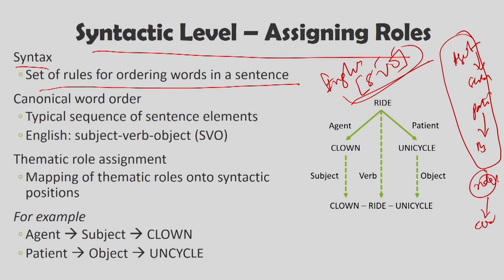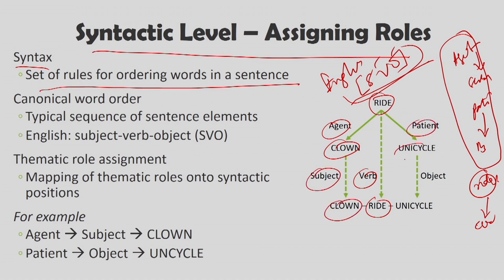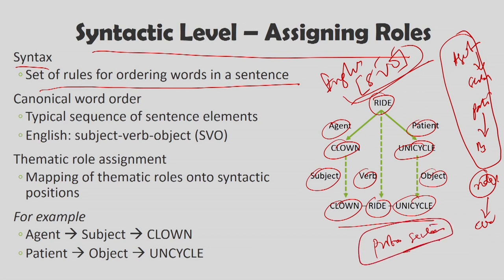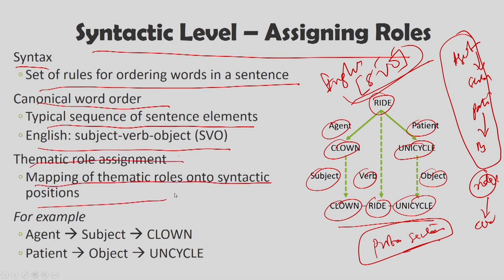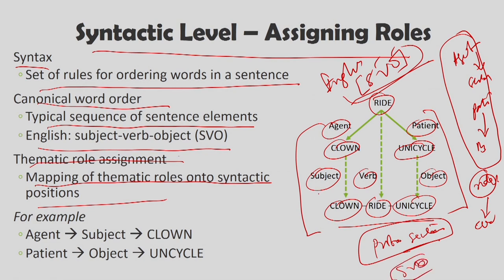Referring back to the example: ride, clown, unicycle can now be assigned an order. Ride is the verb, the agent clown becomes the subject, and the patient unicycle becomes the object — giving us 'clown ride unicycle' as a proto-sentence. In English, the canonical word order is SVO. Thematic role assignment follows this SVO format where the subject, verb, and object are arranged accordingly. For example, agent-subject is the clown and patient-object is the unicycle.